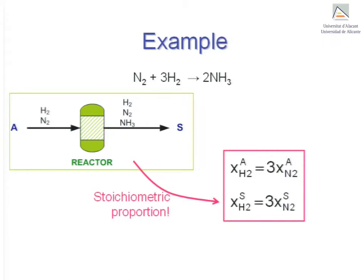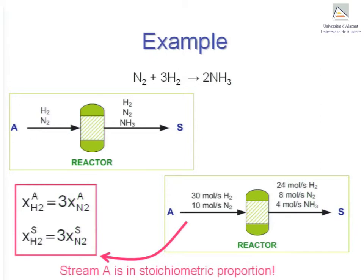This is a specific example involving molar flow rates, where it is possible to see that reactants are in stoichiometric proportion in both the inlet and outlet streams.